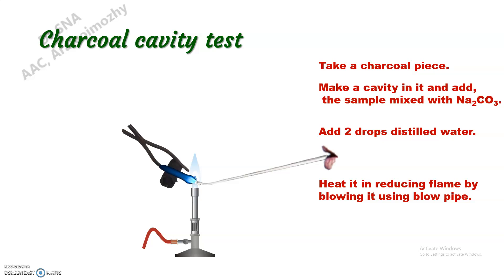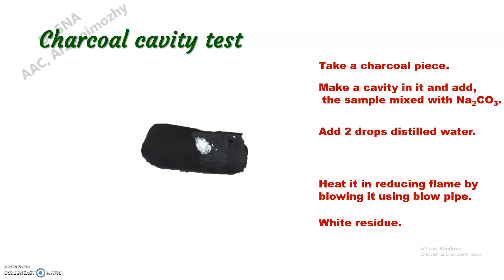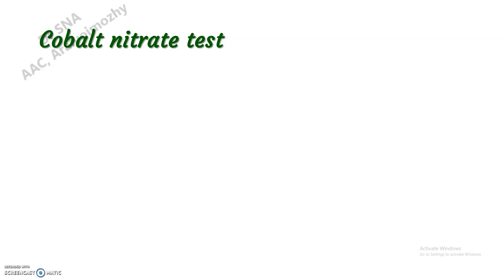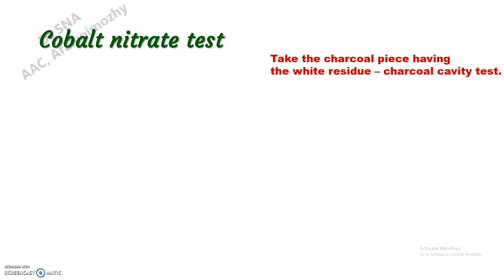Now we can heat it in the reducing flame by blowing it using a blowpipe. After this, we are getting a white residue here. As we are getting a white residue, we can continue to the cobalt nitrate test.